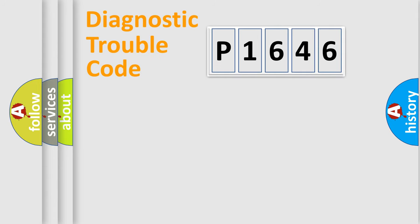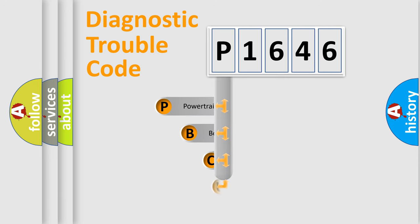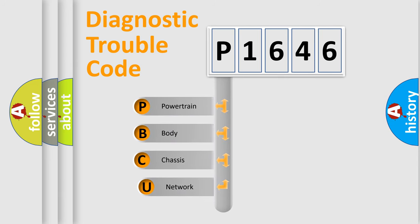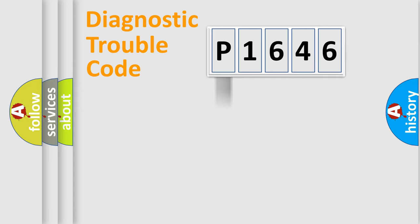Let's do this. First, let's look at the history of diagnostic fault code composition according to the OBD2 protocol, which is unified for all automakers since 2000. We divide the electric system of an automobile into four basic units: Powertrain, Body, Chassis, and Network.